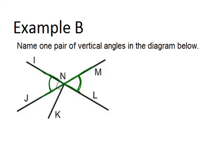Don't be tricked into thinking that this angle and this angle form a vertical angle — that's not right. They're not exactly formed by intersecting lines; this line doesn't go straight through to that one over there. So the only pair of vertical angles are the green ones.